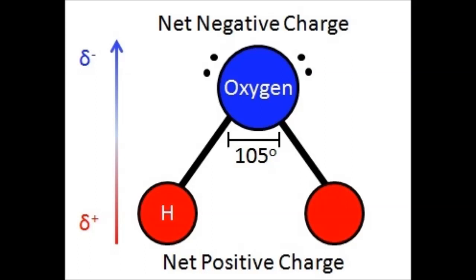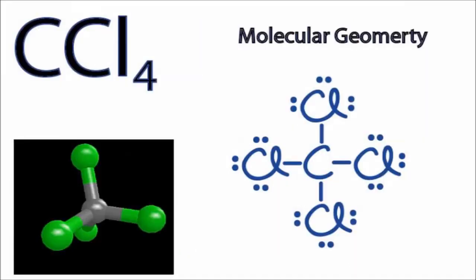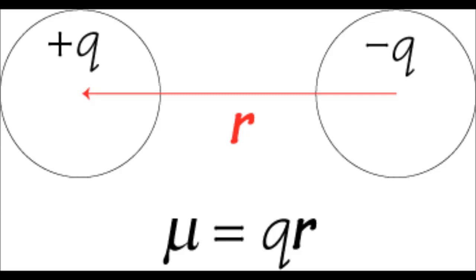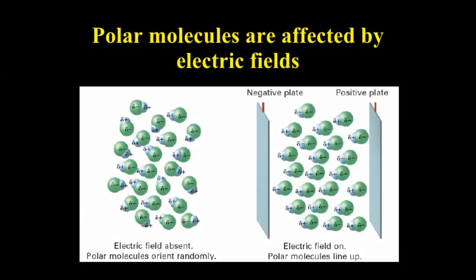Similarly consider the case of carbon tetrachloride. It has four polar CCl bonds but still the molecule is nonpolar because the centers of positive and negative charges coincide, hence making the molecule nonpolar. Polar molecules behave like small magnets and they possess a dipole moment. The dipole moment μ is the product of magnitude of the charges and the distance between the charges. It can be derived by the equation: dipole moment μ equals charge times distance. Molecules which do not have a dipole moment are called nonpolar molecules.